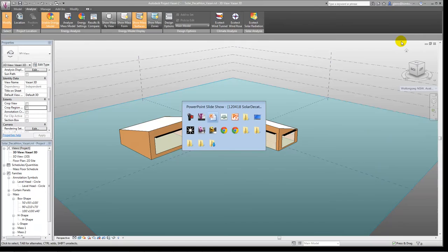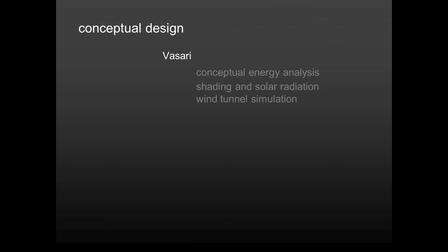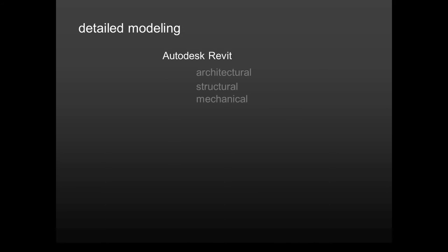Once you've looked at things in Vasari and have some basic idea of what your conceptual design looks like, you probably want to move into more detailed modeling. When it comes time for detailed modeling, probably the best tool to use in the suite is Autodesk Revit. There are tools in there for modeling the architectural features, the structural features, and the mechanical features. Let me take you on a quick tour of what Revit looks like.